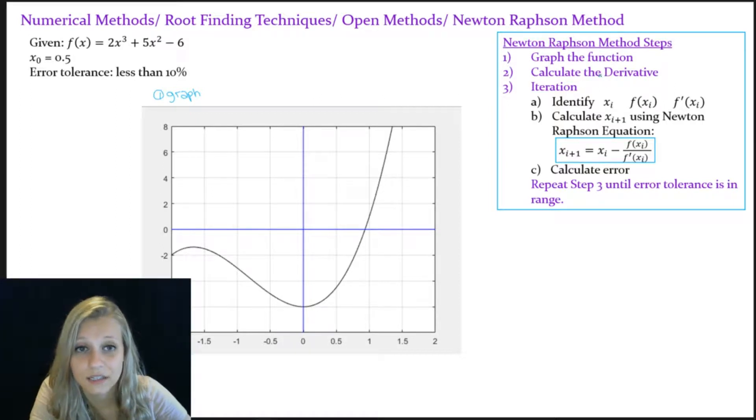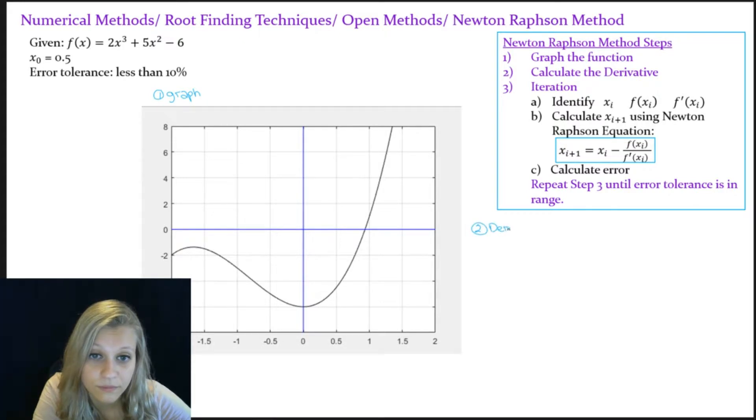The next thing I need to do is calculate the derivative of the function. So my given function is 2x cubed plus 5x squared minus 6. So when I take the derivative of that, I get 6x squared plus 10x.